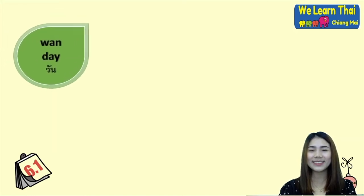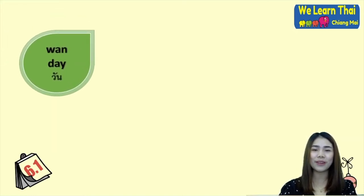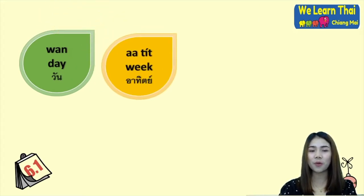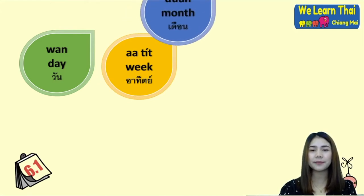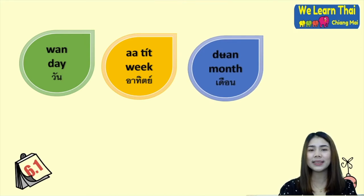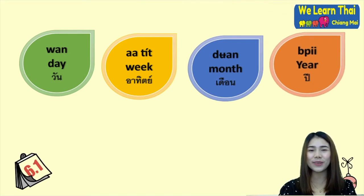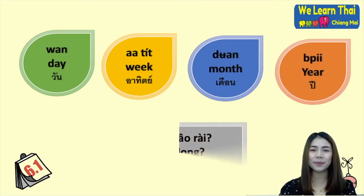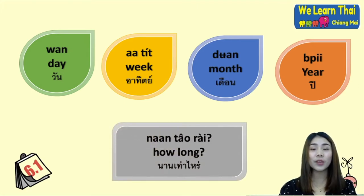Next we have more vocabulary. For the word 'day' in Thai you can say วัน (wan). For 'week' you can say อาทิตย์ (athit). เดือน (deuan) means month, and ปี (pii) means year. The question word นานเท่าไร (nan thao rai) means 'how long.'